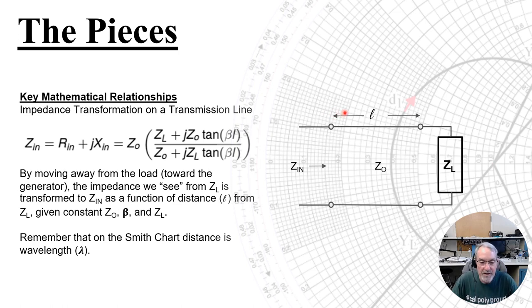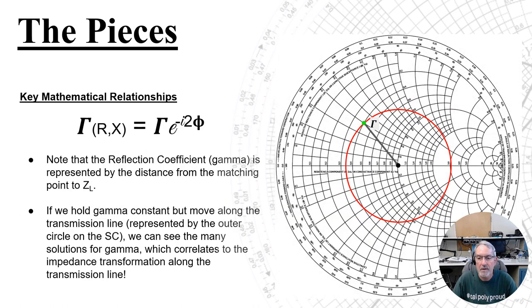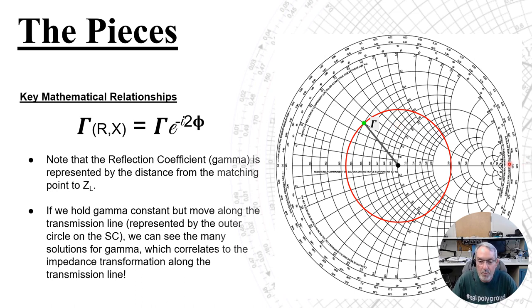This applies for a given characteristic impedance, transmission line phase delay, and the load impedance. Remember that the Smith chart is also in wavelength, so the distance here is wavelength. The next key relationship we care about is the relationship between the reflection coefficient gamma and distance. If we hold gamma constant but move along the transmission line — represented by this outer red circle — we can see the many solutions for gamma, which correlate to the impedance transformation along the transmission line. This is the math relationship that helps us see that.